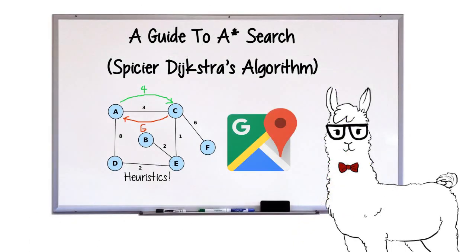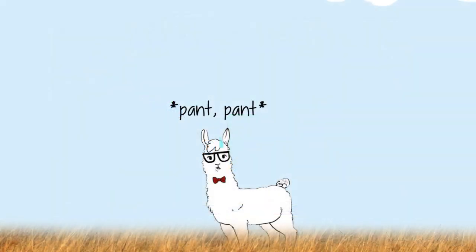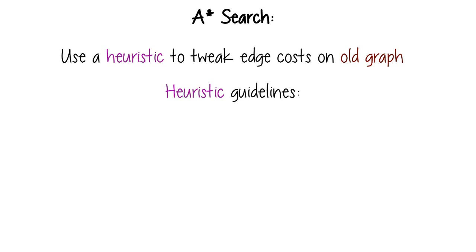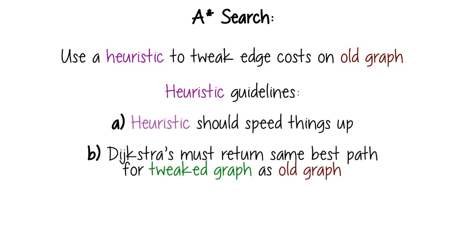This whole process is called A-star search, and it may not seem like much, but it works really well. Usually with heuristics in real life, you're losing some accuracy in exchange for speed, but in A-star, it's often very easy for us to pick a heuristic that both speeds things up on average and guarantees the right answer. How do we do this?